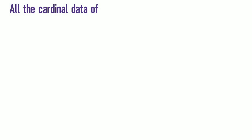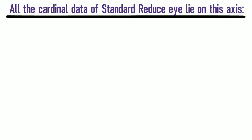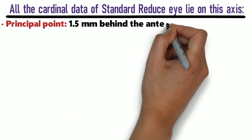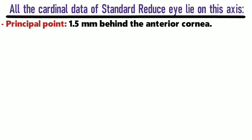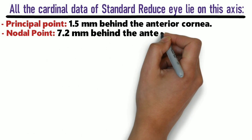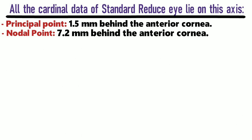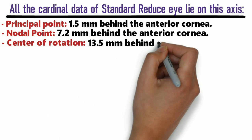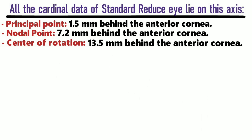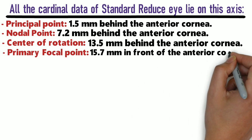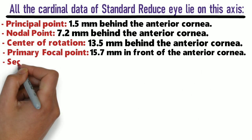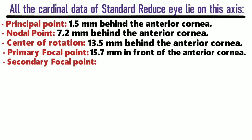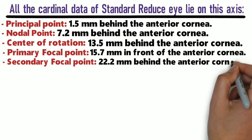All the cardinal data of the standard reduced eye lie on this axis. First, the principal point is 1.5 mm behind the anterior cornea. Second, the nodal point is 7.2 mm behind the anterior cornea. Third, the center of rotation is 13.5 mm behind the anterior cornea. Fourth, the primary focal point is 15.7 mm in front of the anterior cornea. And lastly, the secondary focal point is 22.2 mm behind the anterior cornea.